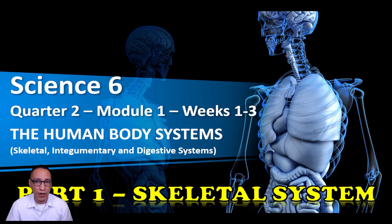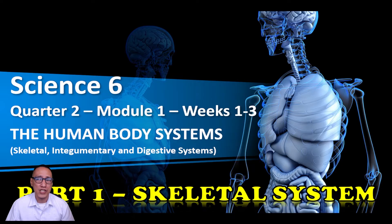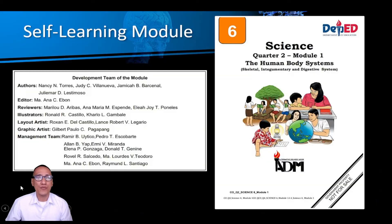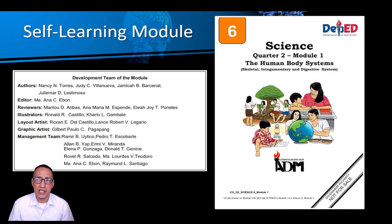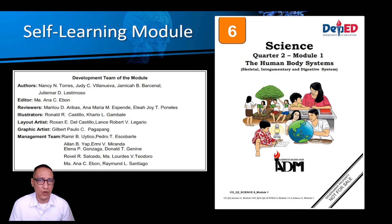The title of the module is the Human Body Systems and it covers the skeletal, integumentary, and digestive systems. But this video is for Part 1 of the module which is the skeletal system, because sa mga localized learning activity sheets ay dina-divide na ito para hindi kayo mahirapan. Part 2 will be for integumentary and Part 3 will be for the digestive system. Our reference material is Science Quarter 2 for Grade 6, Module 1 — the Human Body System — available from DepEd Commons, free to download for enrolled DepEd students.